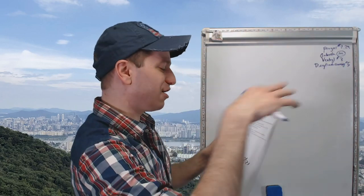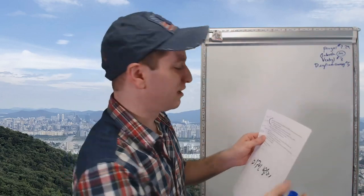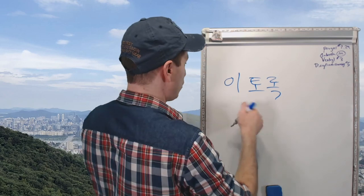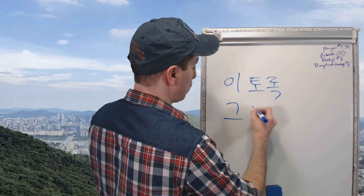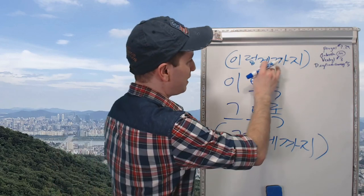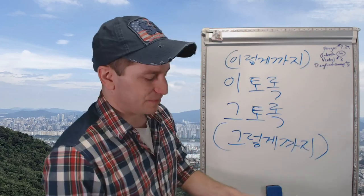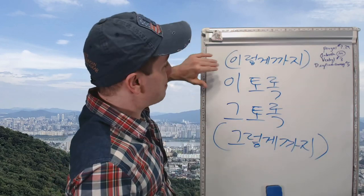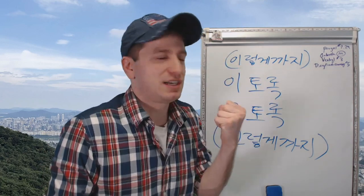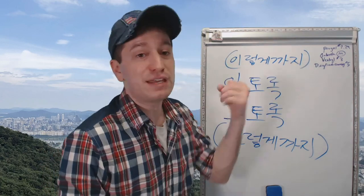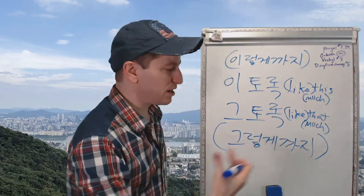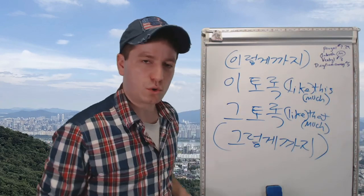영원토록 널 사랑할게 — 'I'll love you forever.' You'll also see 이토록 — 'this much' — or 그토록 — 'that much.' These are the exact same meaning as 이렇게까지 and 그렇게까지: 'even this much' and 'even that much,' with 까지 meaning 'even.' That's all for 토록.